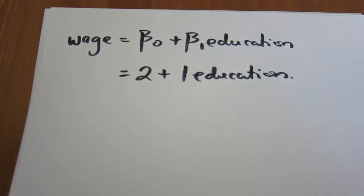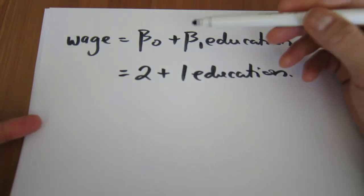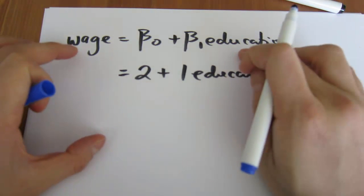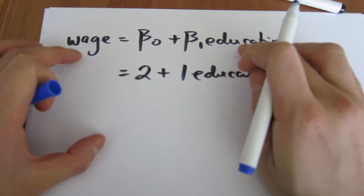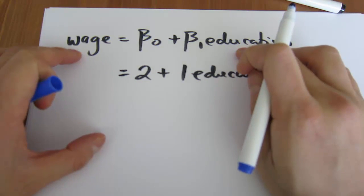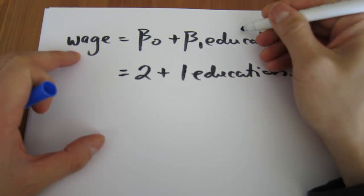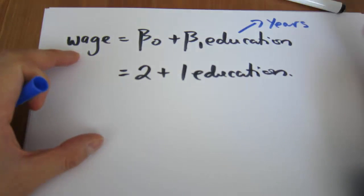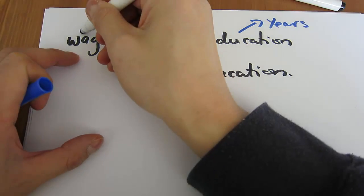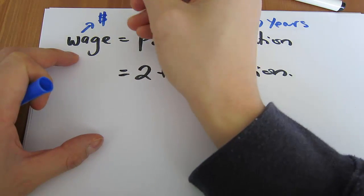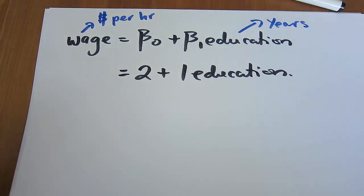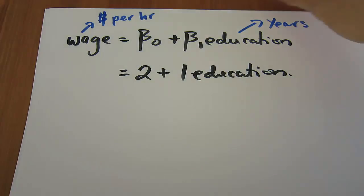In this short video, I'm just going to talk about how we're going to interpret beta1, which is the more interesting coefficient. The first thing you have to do is be aware of what units your x and y variables are measured in. So education is measured in years — your number of years of education — and wages is measured in dollars per hour.